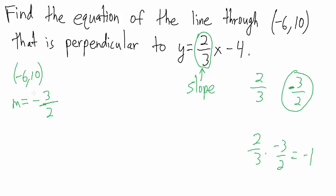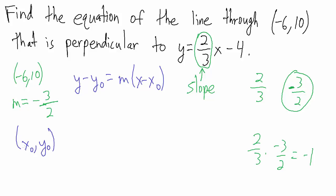Now we have a point on the line and the slope, so we use the point-slope formula: y minus y0 equals m times the quantity x minus x0. Here m is the slope, negative three-halves, and x0 comma y0 is any point on the line. We were given negative six comma ten, so x0 is negative six and y0 is ten.